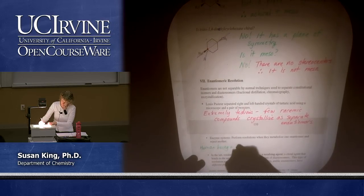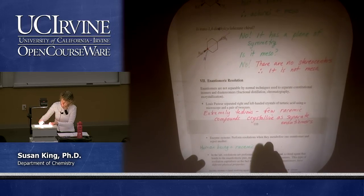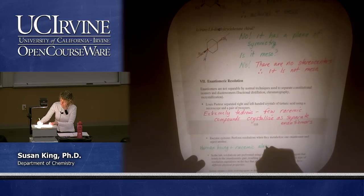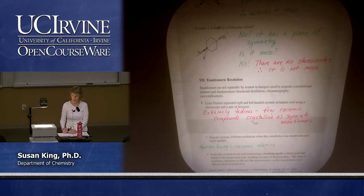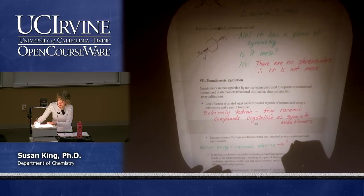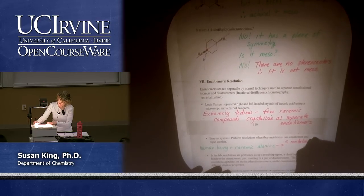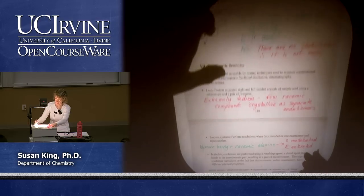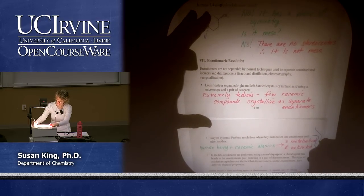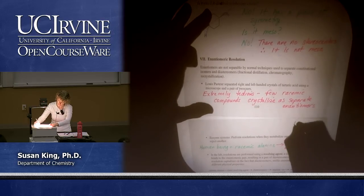Human being plus racemic alanine: if we wanted to separate the two enantiomers of ibuprofen we could extract the wrong enantiomer out of the urine of a human after they've metabolized it. Same thing with alanine — your body is only going to use the S isomer, so the S is metabolized and the R is excreted. This is also not practical — a drug company that just wants one enantiomer isn't going to have human beings eat it and then extract it from urine.